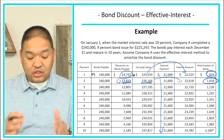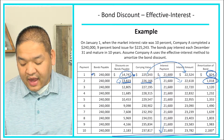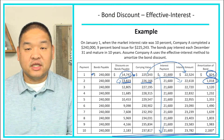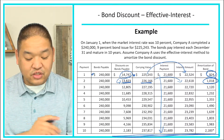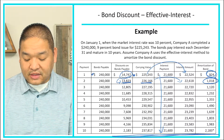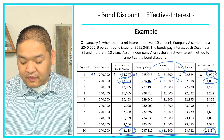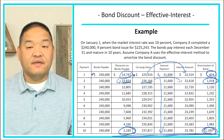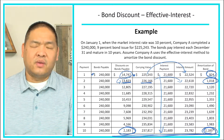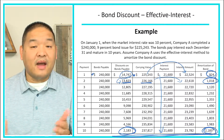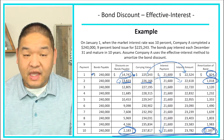We keep repeating this process until we reach the 10th year, at which point the carrying value equals the bonds payable because there's no remaining discount on bonds payable. There may be a small difference in the final year due to rounding, but those numbers should effectively be the same.